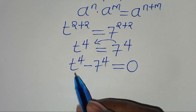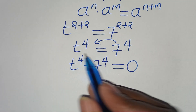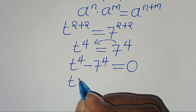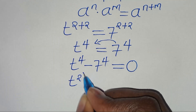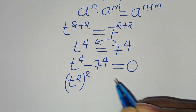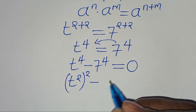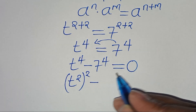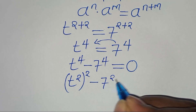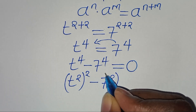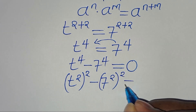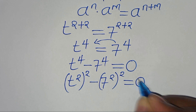We can express t to the power of 4 as t squared raised to the power of 2, minus 7 to the power of 4 which is 7 squared raised to the power of 2, and this equals 0.